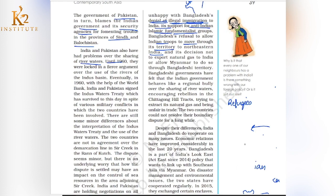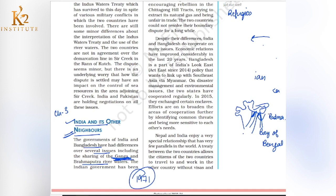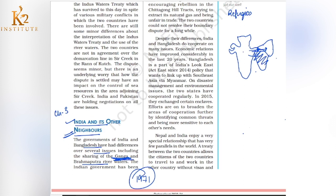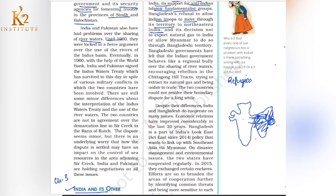Bangladesh also refused to allow Indian troops to move through its territory to reach North-Eastern India. If we could use Bangladesh's land, we could go through to the North-Eastern states. But Bangladesh did not allow that. Bangladesh also declined to export natural gas to India and refused to allow Myanmar to use its territory to supply gas to India.